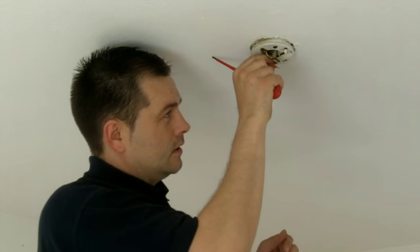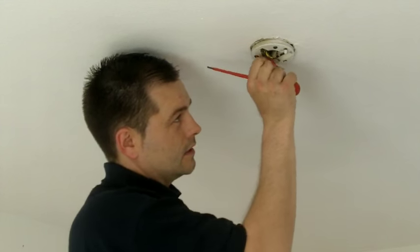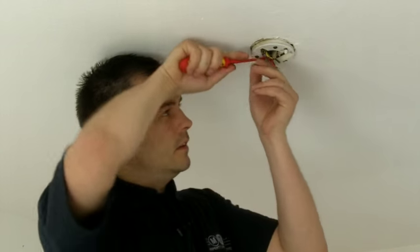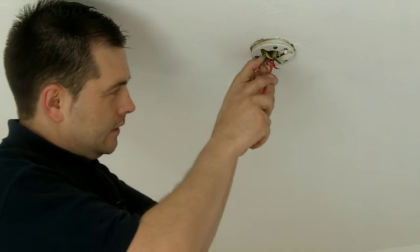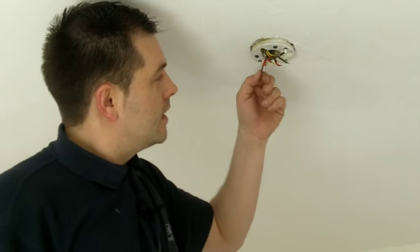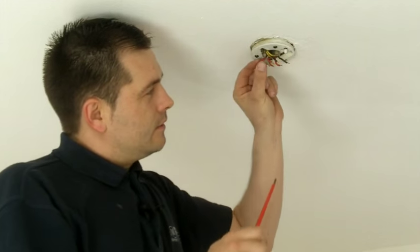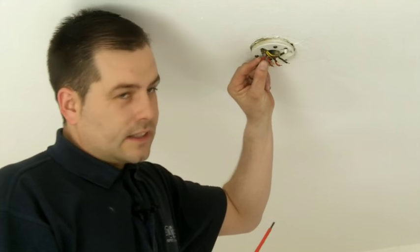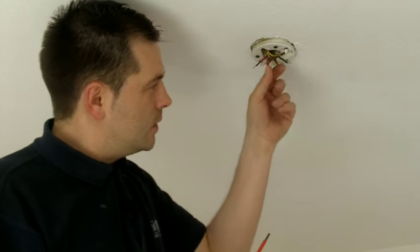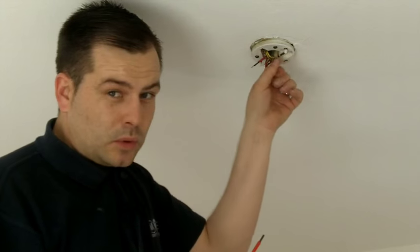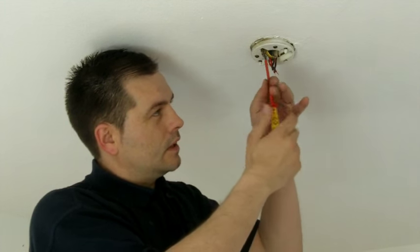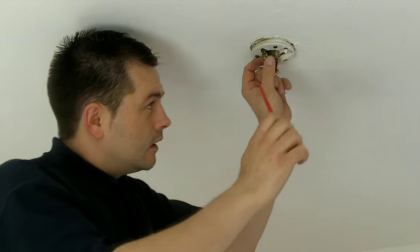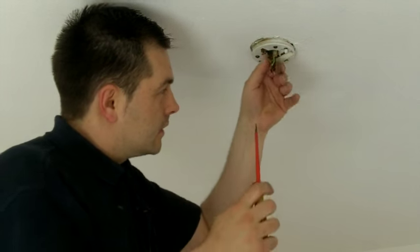So if we first remove the cables from this existing terminal you can then see that one of these black cables, which may also be blue in the newer homes, one of these black cables will be identified with a red sleeving. Now this is to show that this is the live cable that activates your light fitting and carefully remove the earths.